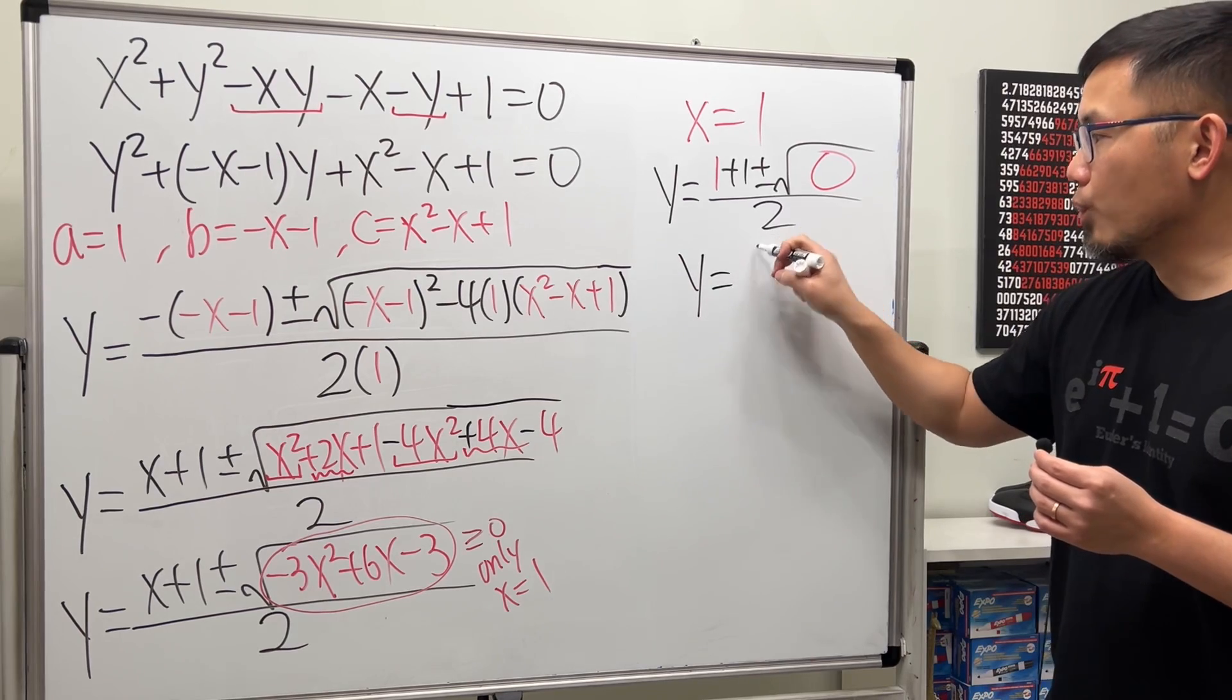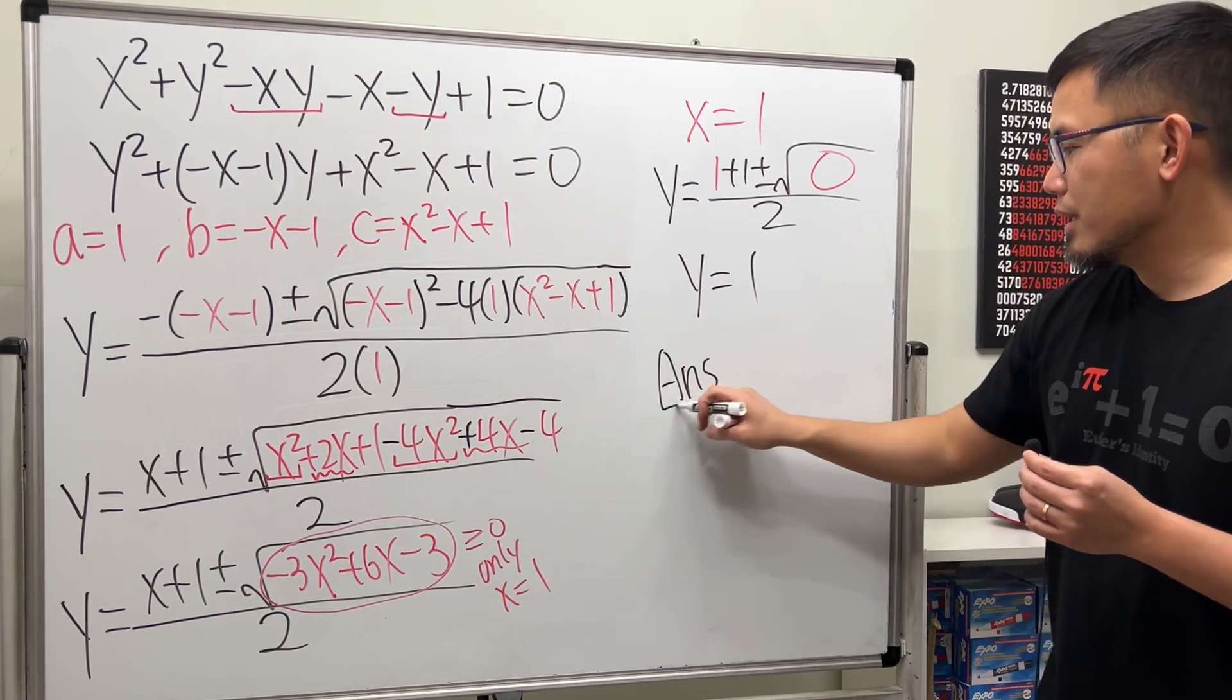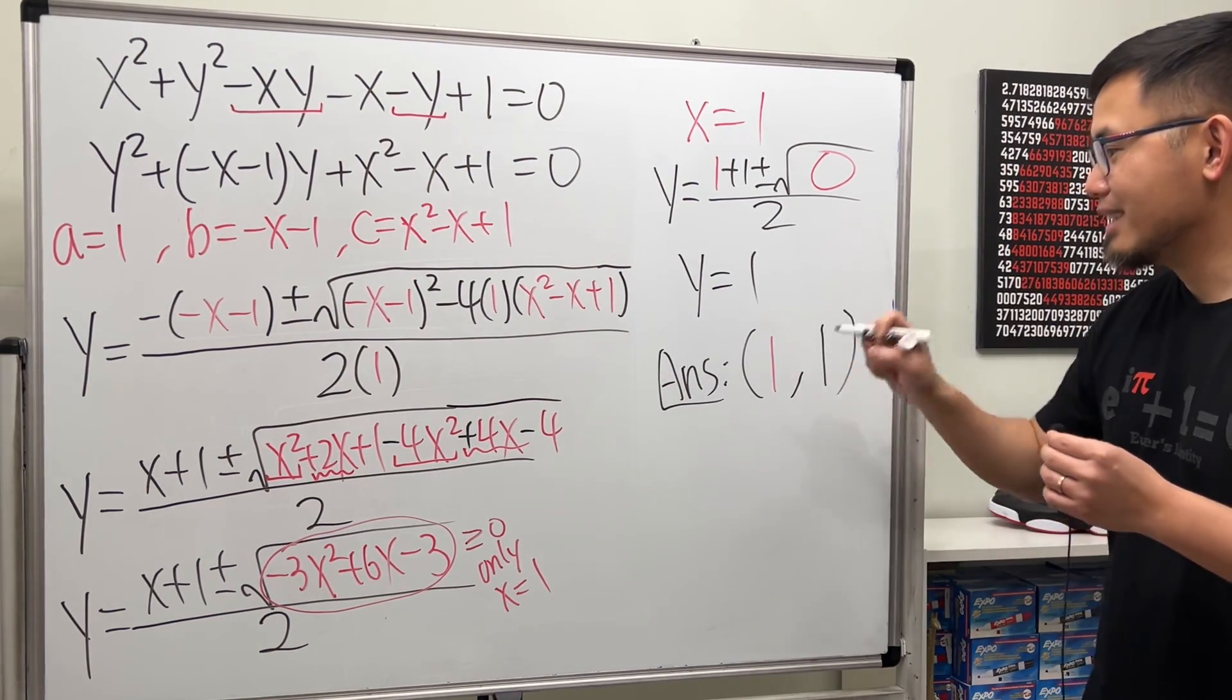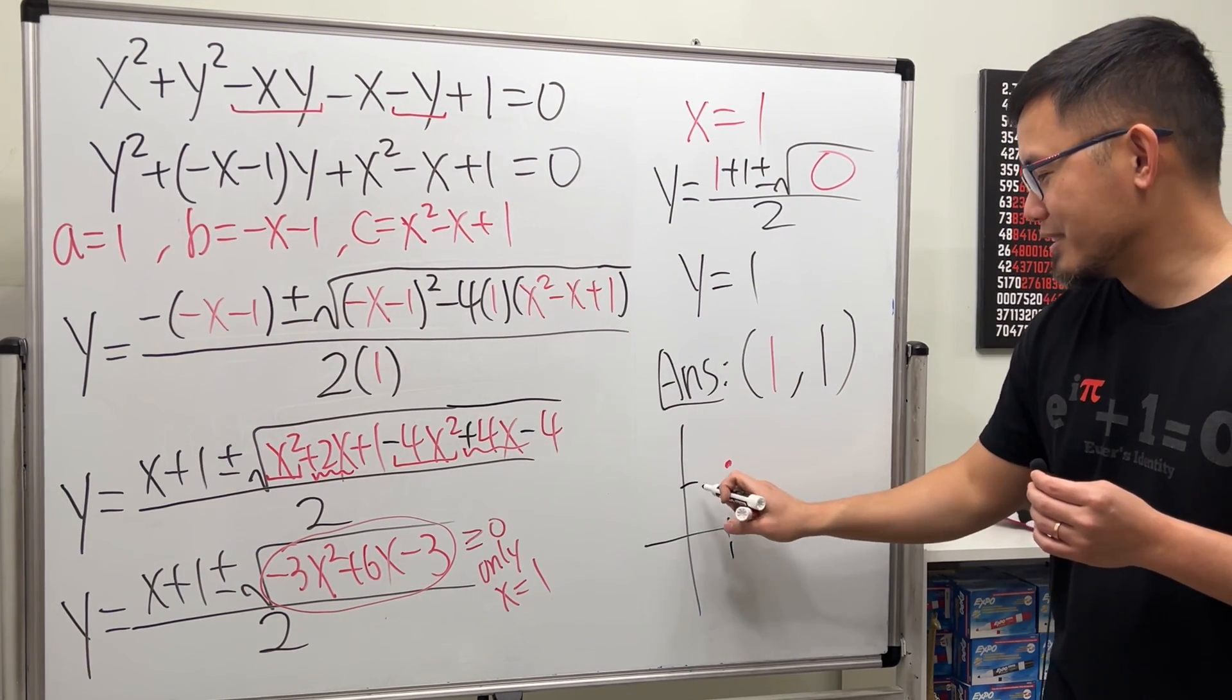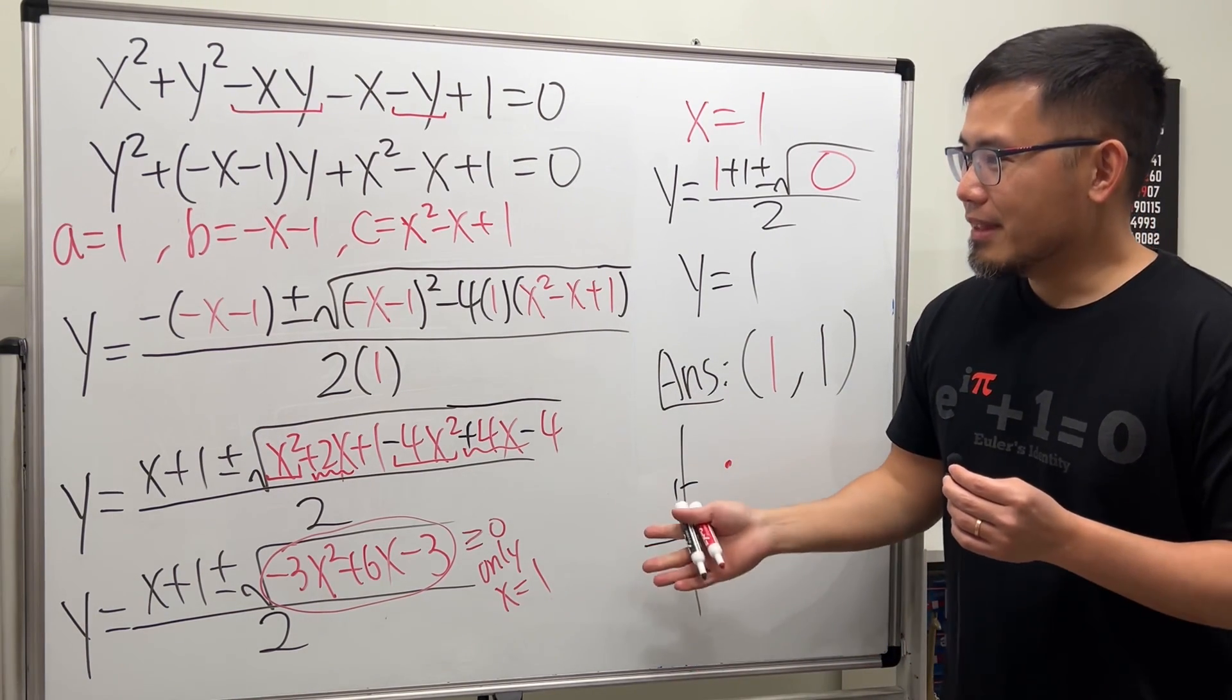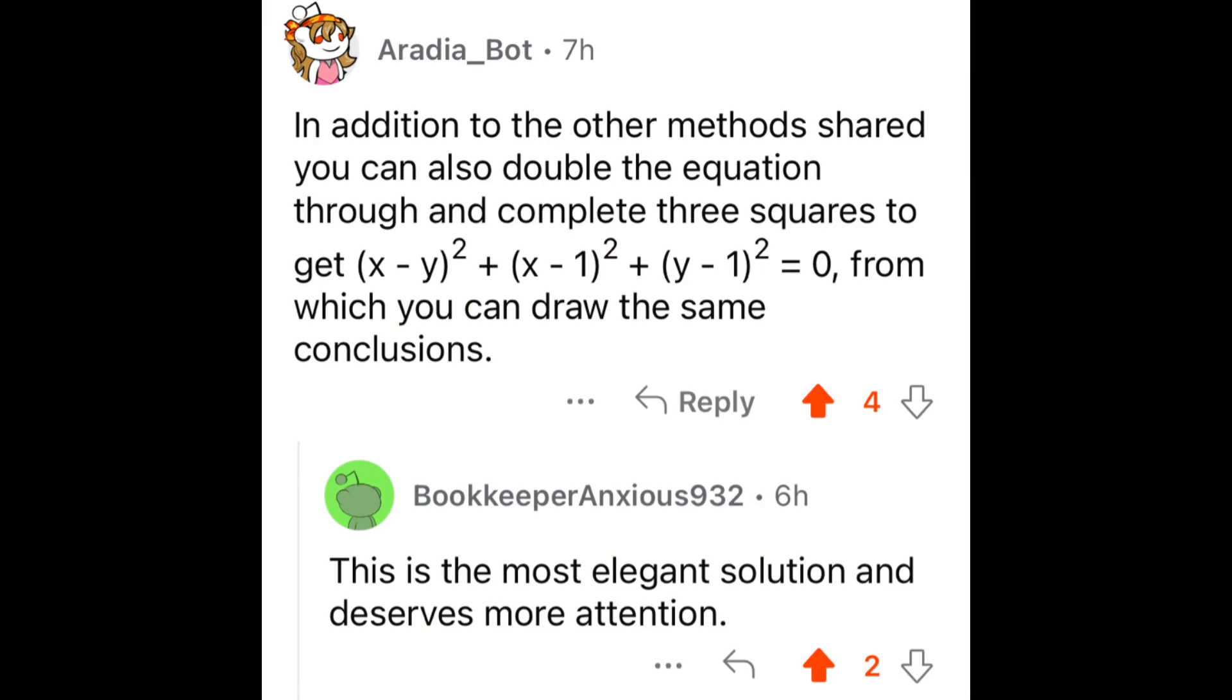So the only answer for this right here is just one comma one, just like that. And I'll also show you the graph; the graph is just going to be a point like this. So this is how I will solve it.